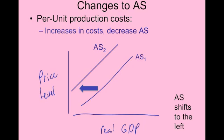Always think of shifting aggregate supply and aggregate demand to the right or to the left — increase or decrease. Do not think about shifting these curves up and down. Never phrase them as shifting up or down, because it will lead you into difficulties. Always to the right or to the left.